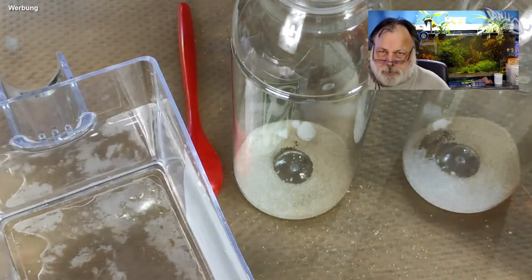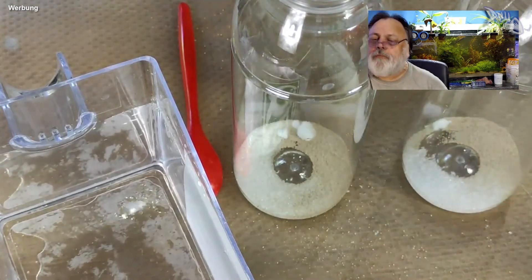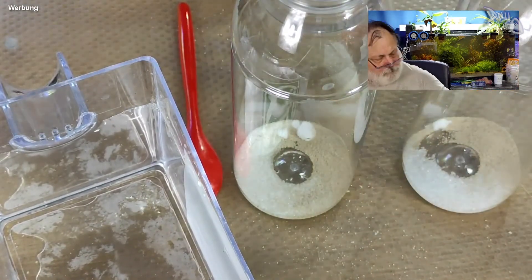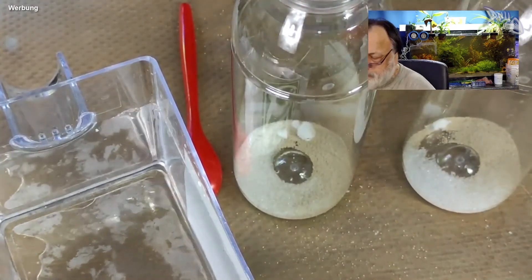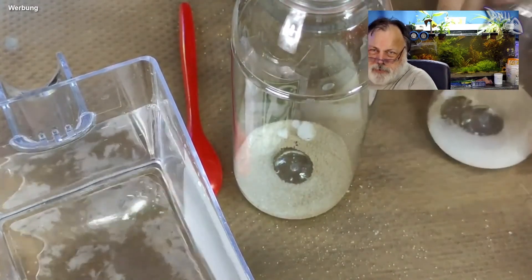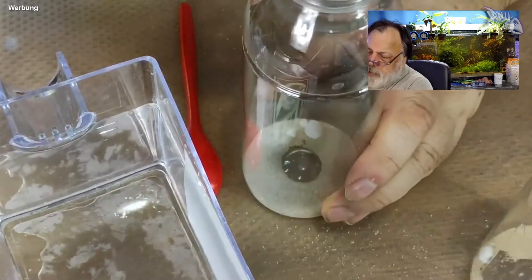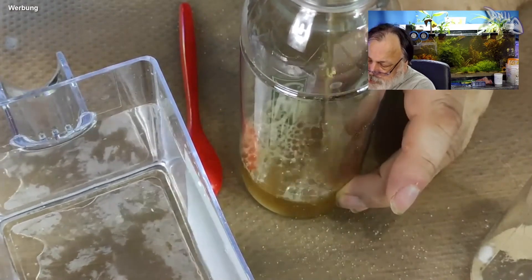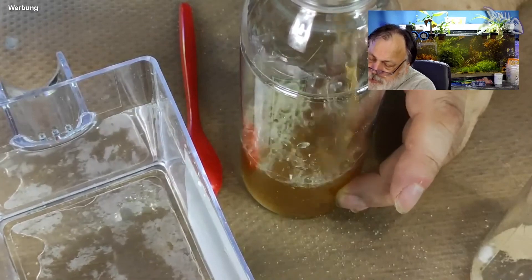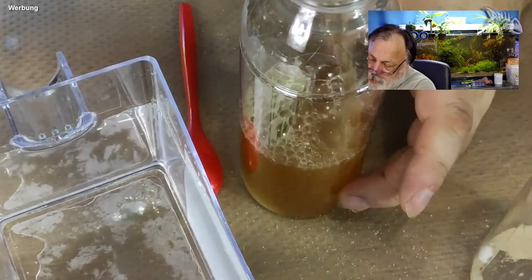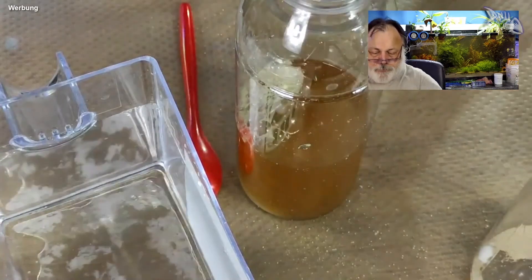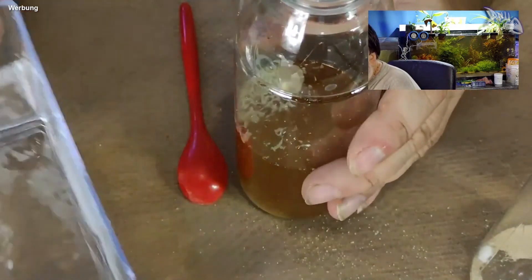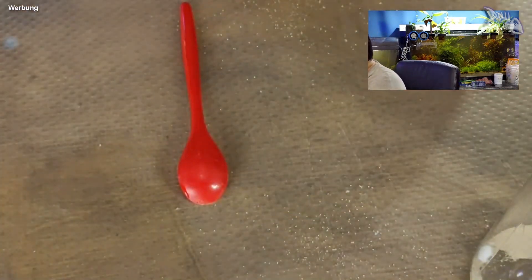Dann nehmen wir den Apfelessig. Riecht lecker. Nehmen wir mal erstmal die Flasche. Dann machen wir die Hälfte der Menge, die wir ansetzen wollen, die nehmen wir in Form von Apfelessig.